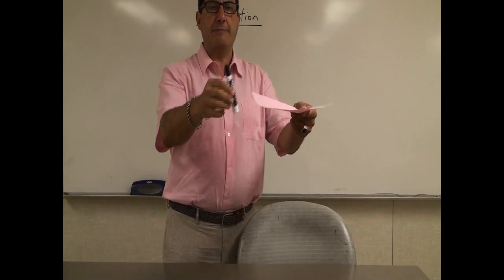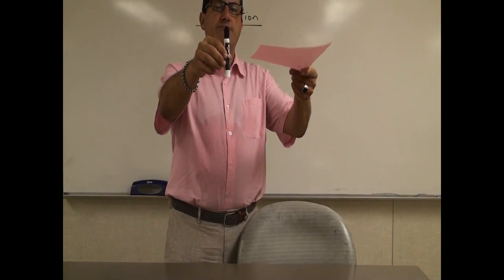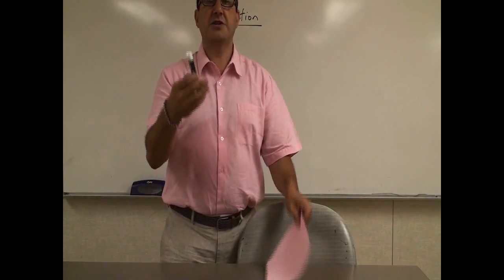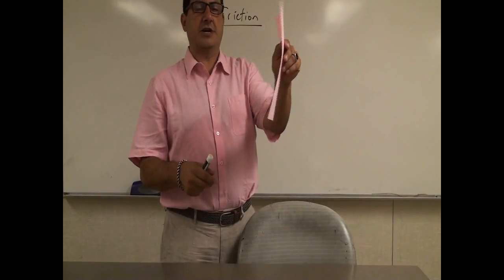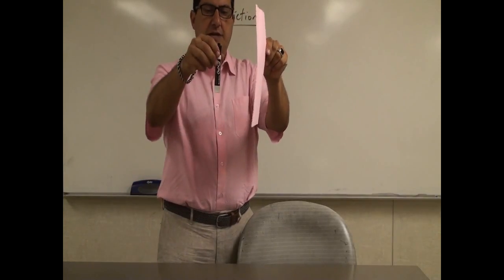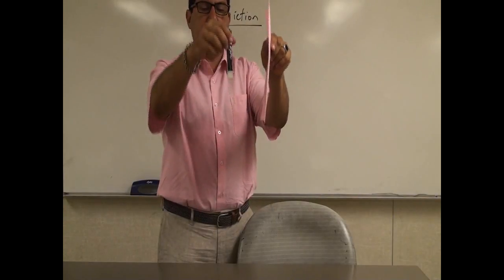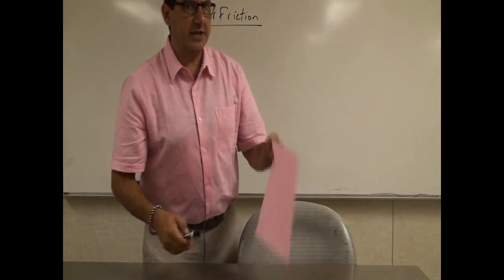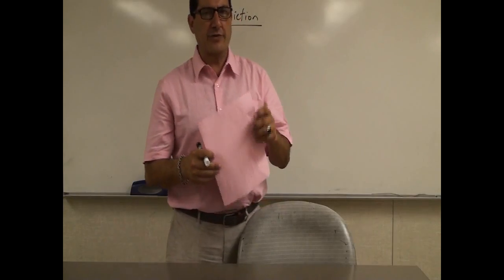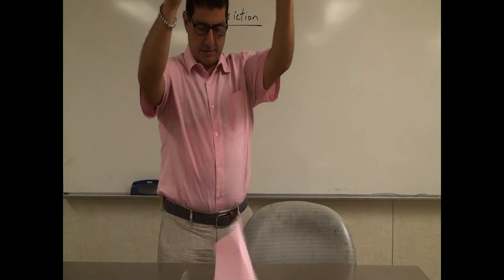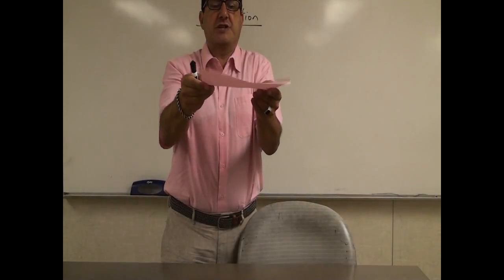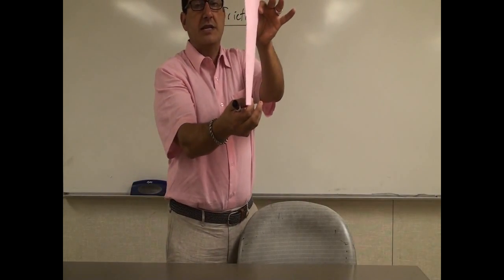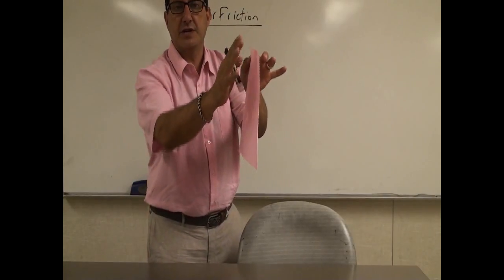If I make a marker and a paper race and drop both of them, the marker hits the ground much faster. But if I try different versions of the paper — a paper that is vertical like this — it has less cross-sectional surface area, and they kind of hit the table around the same time. If I give more distance, you're going to see that the marker probably wins. So just by changing the surface area from flat to vertical, that affected the effect of air friction on the paper.